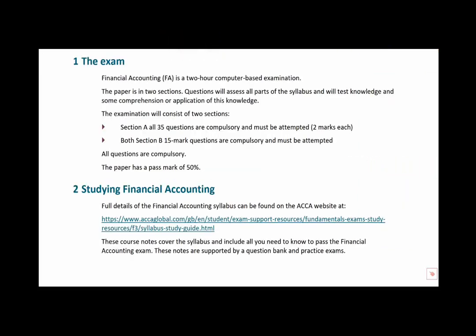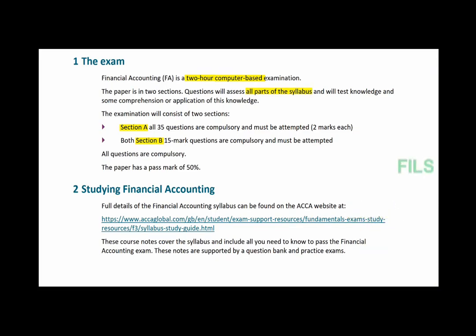You'll find this information in your course notes. So this is a two-hour exam and it's on a computer. There are two sections: Section A and Section B. Both parts — in fact the entire paper — cover areas from all of the syllabus. You can't think you can pass by learning only half the syllabus. You have to know it all. The questions can test knowledge — simple learn and churn — but you also need to understand and apply information in different scenarios, so you need an in-depth knowledge of the whole syllabus.